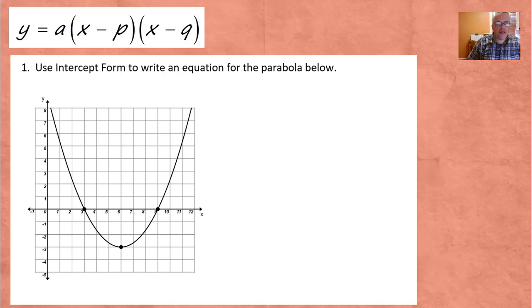Here's intercept form right here. P and Q stand for the intercepts of the parabola, and we also have this number A in front, which controls whether it opens up or down and how stretched out it is. So given the intercepts of a parabola and one other point, we can find P, Q, and A and write the equation.